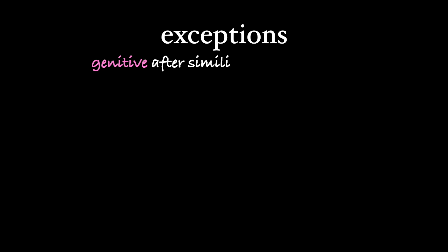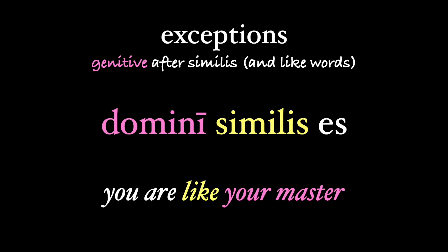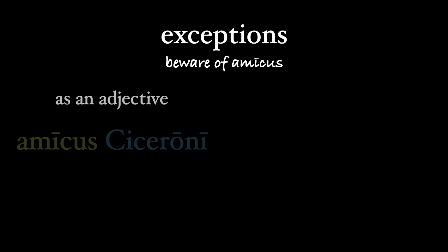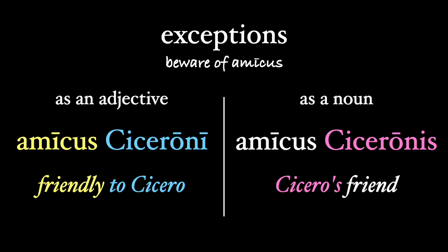And sometimes the genitive is used after similis, especially in early Latin, sometimes in Cicero. Domini similis es — you are like your master, or more literally, you are your master's likeness. And going back to amicus, the phrase amicus Ciceroni means friendly to Cicero. But if we were to use amicus as a noun, we'd need the genitive: amicus Ciceronis — Cicero's friend — a much closer relationship. But for the most part, the dative flows naturally off of the meaning of the adjective.